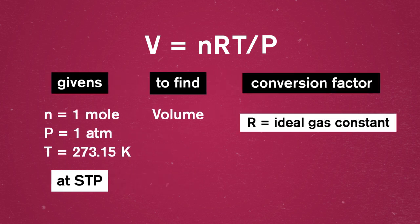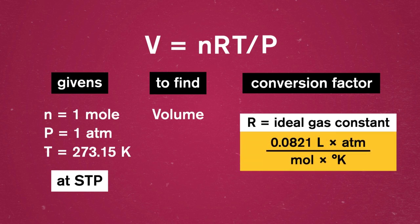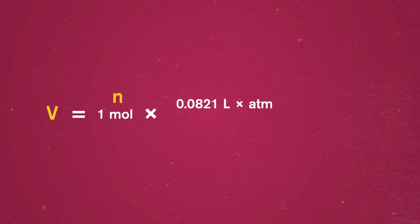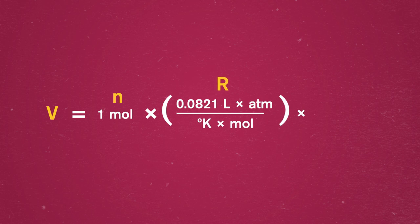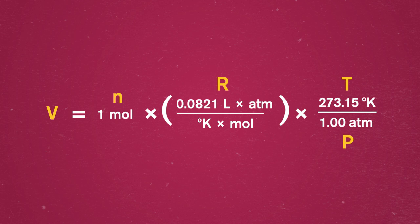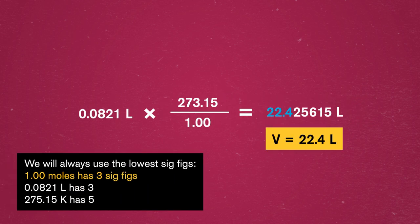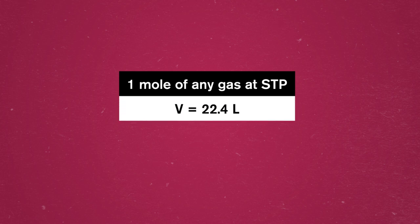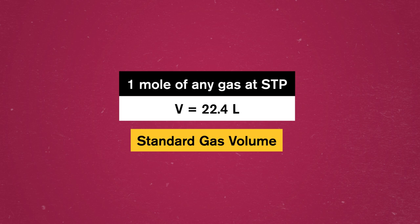R is the ideal gas constant and can equal 0.0821 liter atmospheres per mole kelvin. Since this R has atmospheres and kelvins in it, we'll express P in atmospheres and T in kelvins so all our units match up. Our equation becomes: volume equals 1 mole times 0.0821 liter atmospheres over moles kelvins, times 273.15 kelvins over 1 atmosphere. Our moles, kelvins, and atmospheres all cancel out, leaving us with liters. Having all those units around comes in handy. Multiplying and dividing our numbers and rounding to three sig figs, we can now say that for one mole of any gas at STP, the volume is 22.4 liters. We've just proven the standard gas volume at one mole.